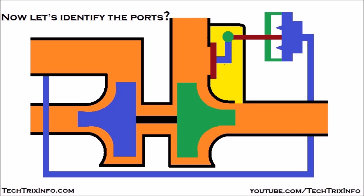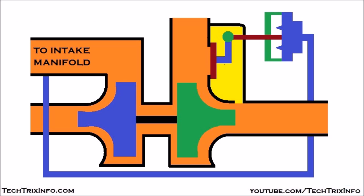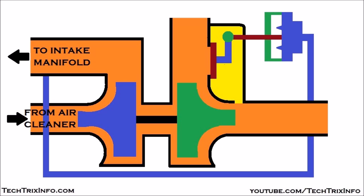Now let's identify all the ports on a wastegate turbocharger. This is the port to the intake manifold — the compressed air from the compressor is passed to the intake manifold of the engine through this port. The atmospheric air coming from the atmosphere is sucked through the air cleaner, filtered, taken in towards the compressor, compressed, and passed to the intake manifold. This is the port from the air cleaner.